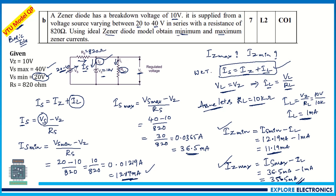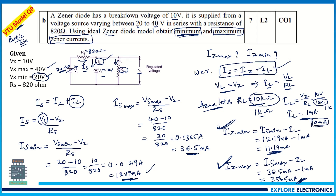So the answers are: zener current minimum = 11.19 milliamps, zener current maximum = 35.5 milliamps. If instead we take RL = 1 kilohm, then IL = 10 volts / 1 kΩ = 10 milliamps. In that case, IZ_min = 12.19 − 10 = 1.19 milliamps and IZ_max = 36.5 − 10 = 25.5 milliamps. This is how you solve problems on zener diode voltage regulators when asked to find minimum and maximum zener currents. Similarly, given the zener current, other parameters can also be found. Thank you.